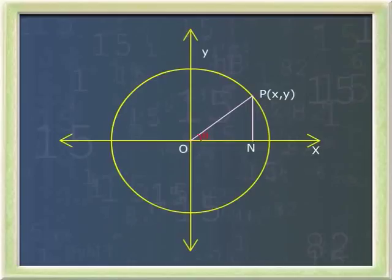Then ON is the projection of OP on OX. Let ON equal X, NP equal Y, and OP equal R. Angle PON equals theta. Angle PNO equals 90 degrees. Hence, triangle PNO is a right-angle triangle.